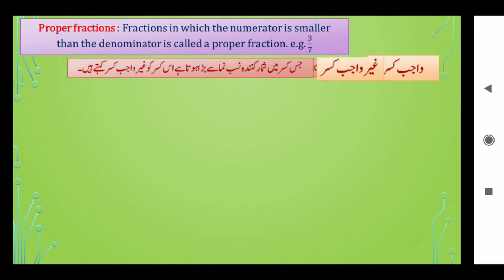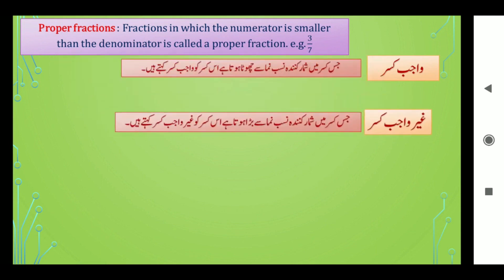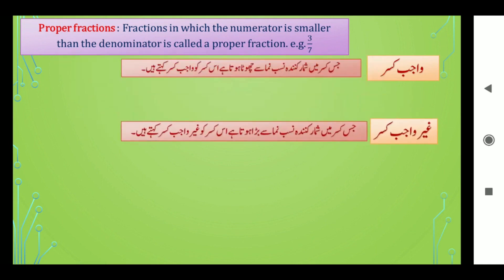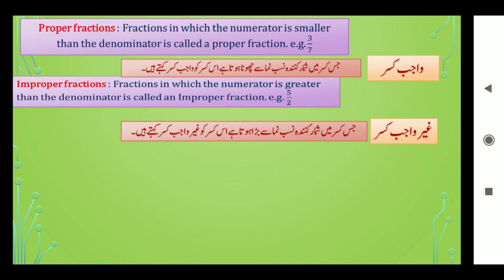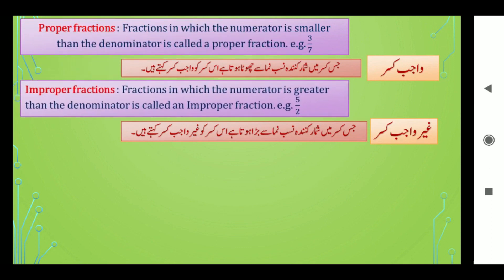اس کے بعد غیر واجب قصر — جس قصر میں شمار قرندہ نصف نماز سے بڑا ہوتا ہے اس قصر کو غیر واجب قصر کہتے ہیں۔ Improper fraction: a fraction in which the numerator is greater than the denominator is called an improper fraction.